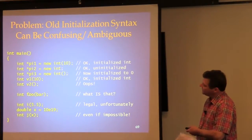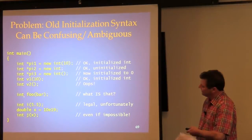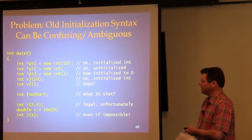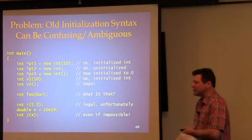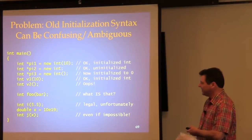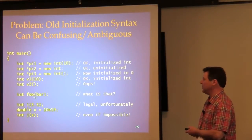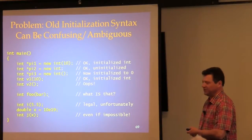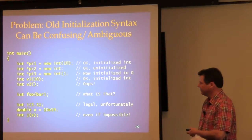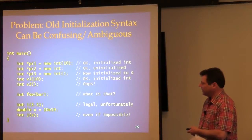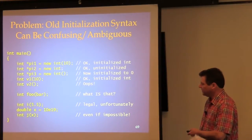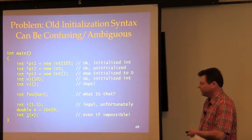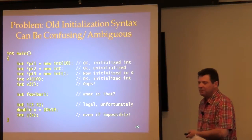Another case: 'int foo(bar)' — one interpretation is an int named foo initialized to some value bar, but if bar is a type, this becomes a function declaration. Not knowing what bar is means we don't even know if this is a declaration or an initialization. Also in old C++, you can initialize an int to 5.5 — it just truncates — or initialize a double to a very large number and use it to initialize an int, which is undefined behavior but no compiler error.